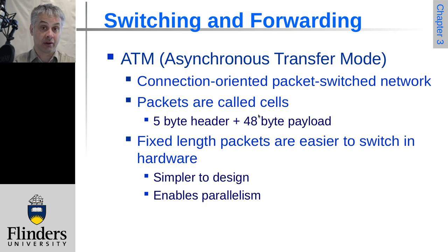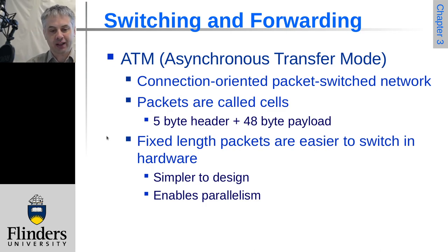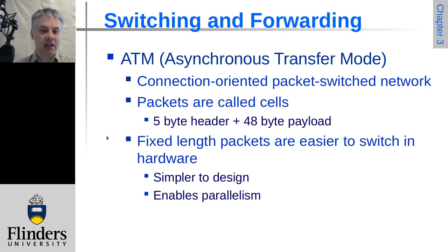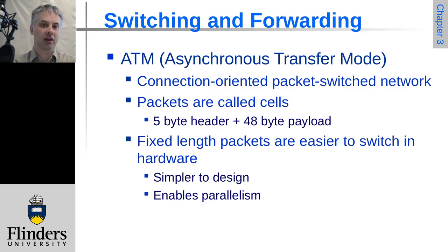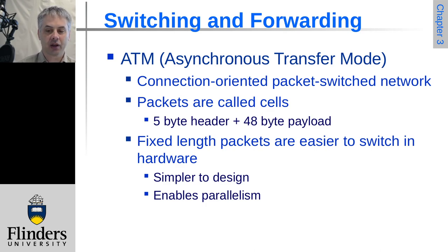Instead ATM relies on virtual circuits to make it reasonably efficient. The design choice was to have fixed-length packets — unlike Ethernet where packets vary in length, every ATM frame is 5 plus 48, so 53 bytes long. Having all packets exactly the same length made the switching hardware easier to design (ATM was created when hardware was less capable). It also made it much easier to receive and process multiple packets in parallel, since packet boundaries always line up neatly, enabling very efficient pipelined hardware implementations.